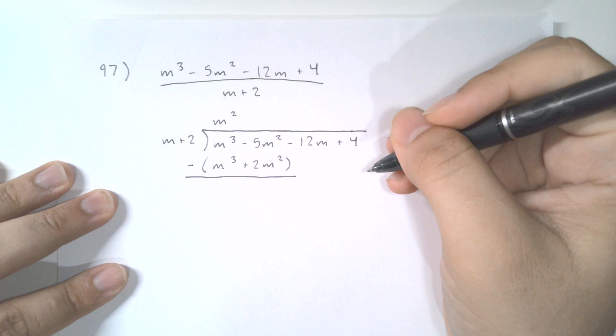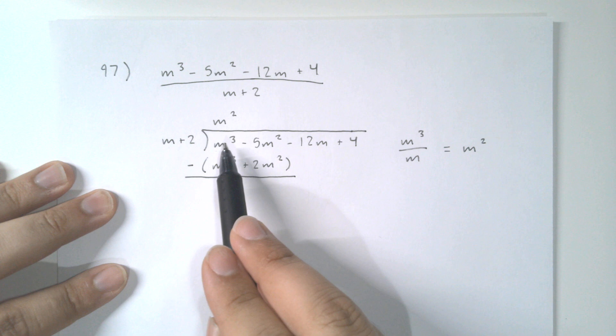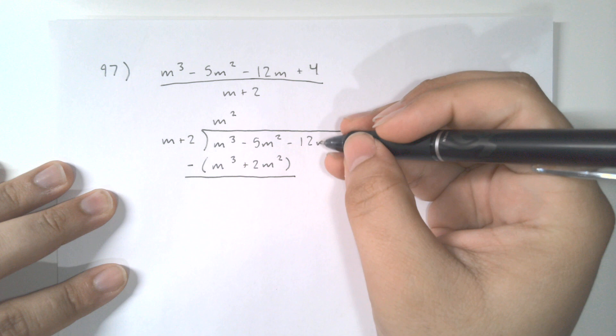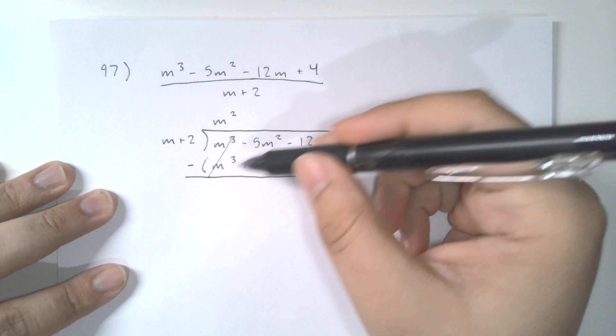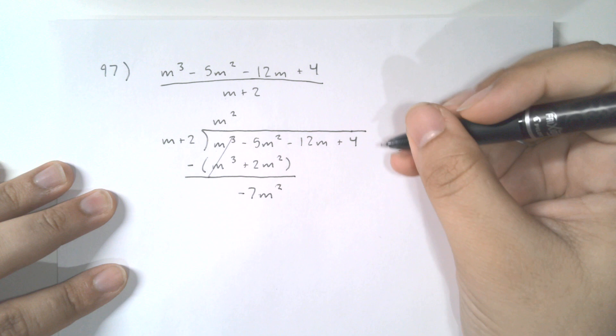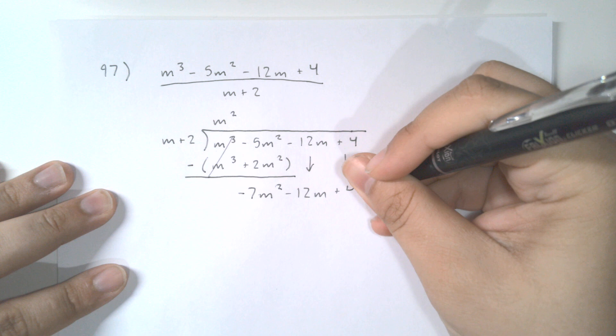Now we do subtraction. When we do subtraction, we have to flip the signs on the second polynomial. So m² - m² is zero — when doing polynomial long division correctly, these two terms will always cancel. Now we have -5m² - 2m², which is -7m². Just like regular long division with numbers, we bring down our other terms: -12m + 4.